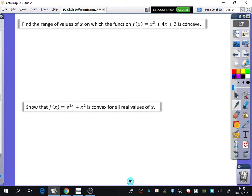So here it says, find the range of values of x which the function f(x) = x³ + 4x + 3 is concave. So if we want to find out when it's concave, first of all, we need to find out what f'(x) is, which is obviously 3x² + 4. Then we need to find out what the second derivative is, which is just going to be 6x.